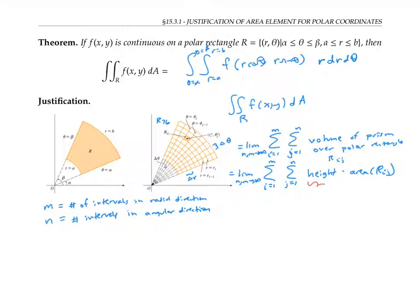So the height is going to be given by f of (r_i* cos θ_j*, r_i* sin θ_j*), since that's the sample point converted into x and y coordinates, since f is a function of x and y. So we need to multiply that by the area of rectangle r_ij.